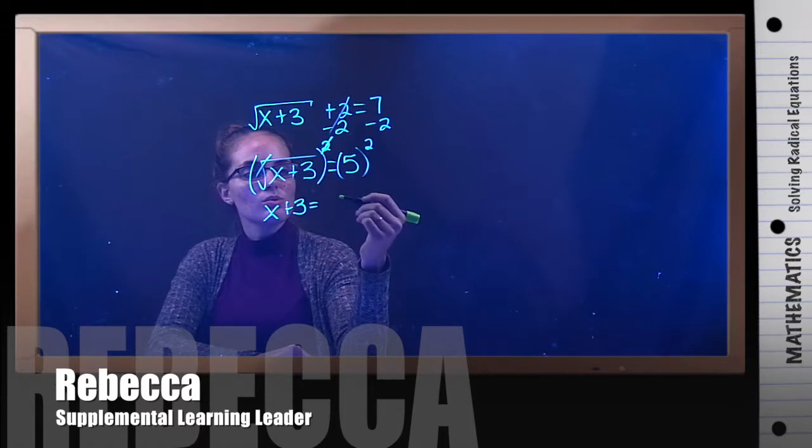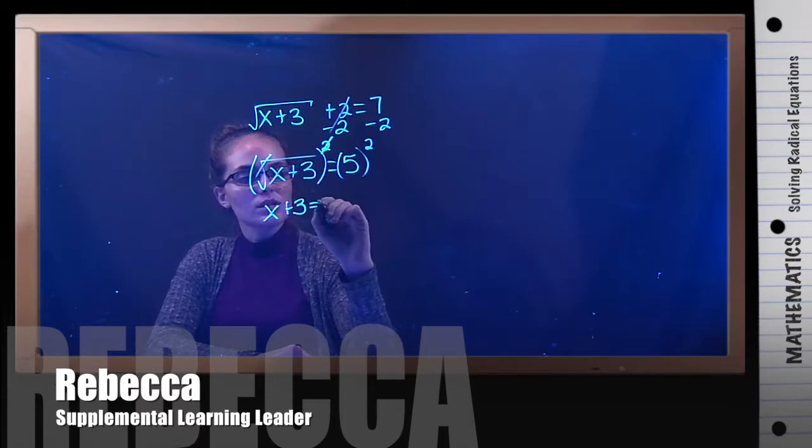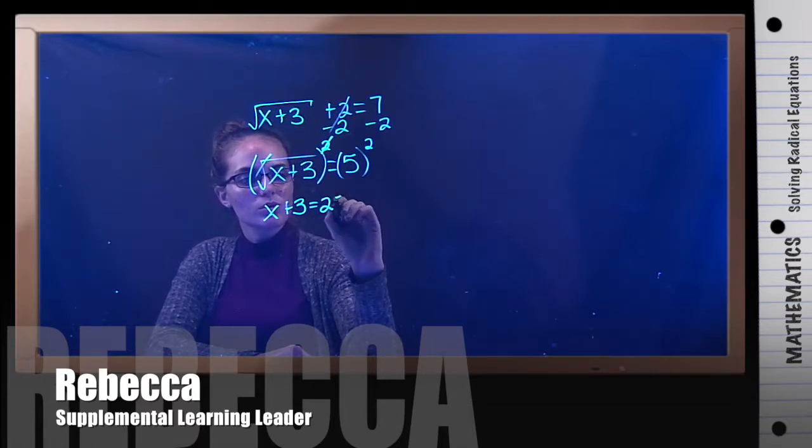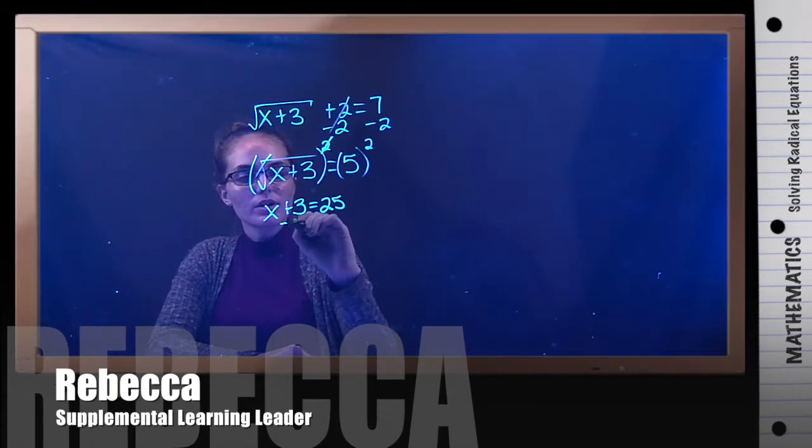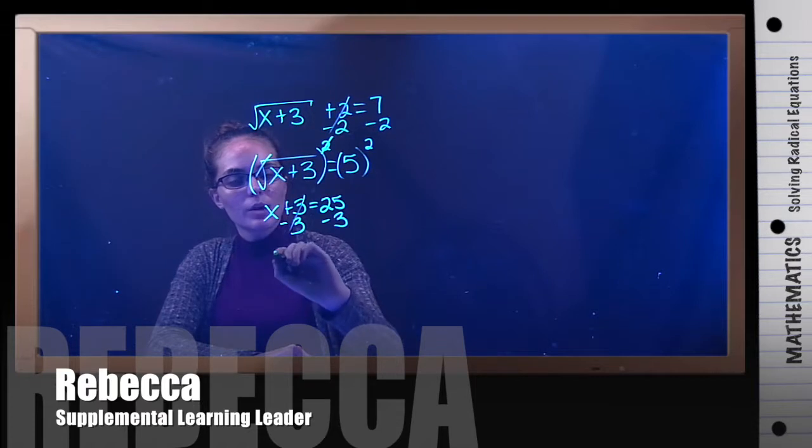And then equals 5 squared is 5 times 5, which is 25. Now we're going to subtract 3 to isolate the x. And we get x equals 22.